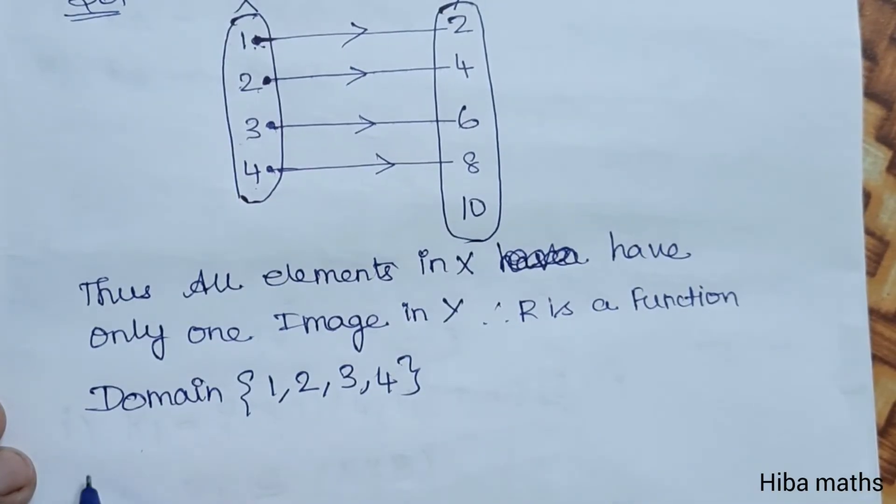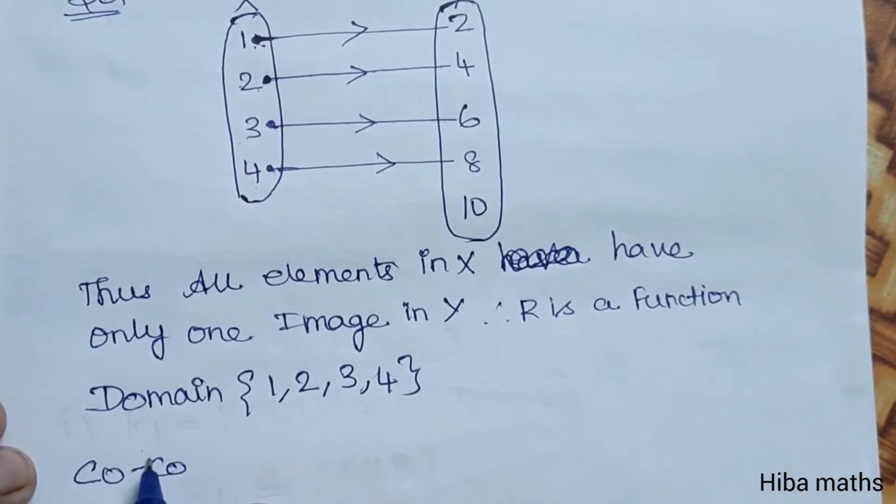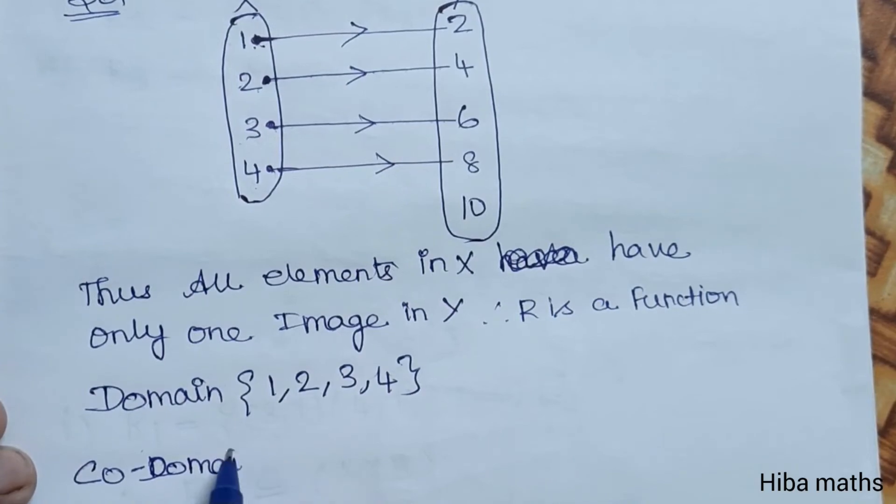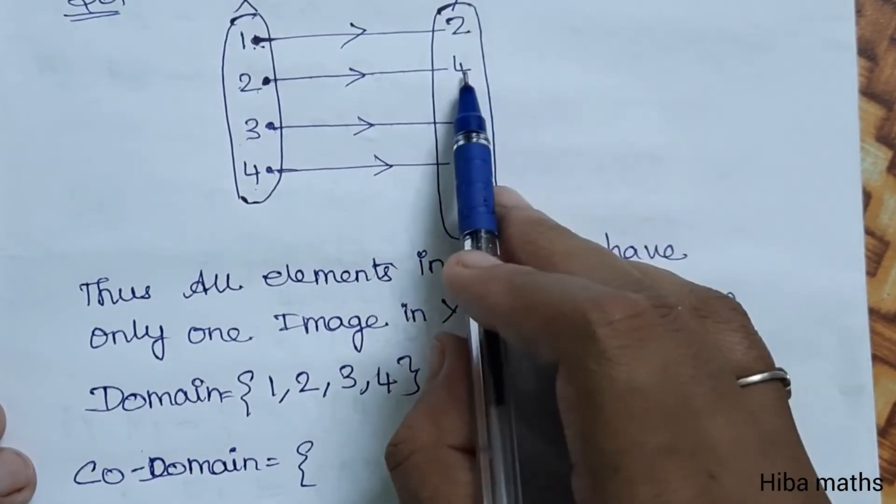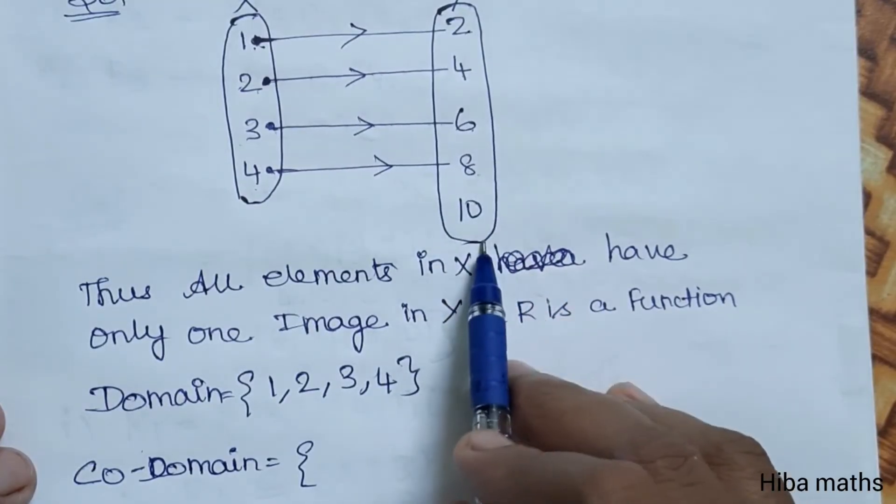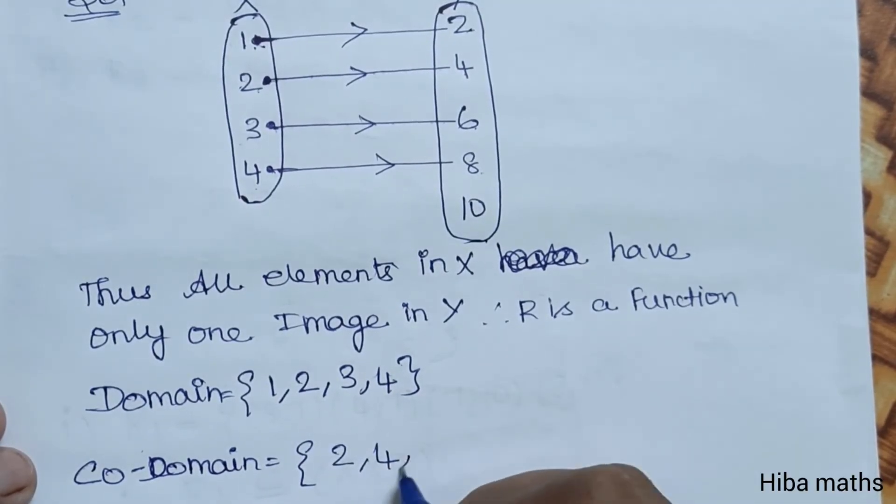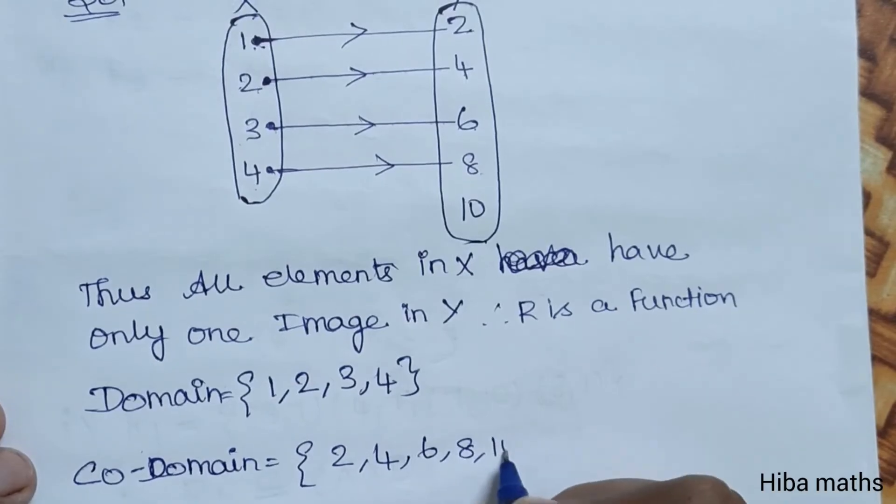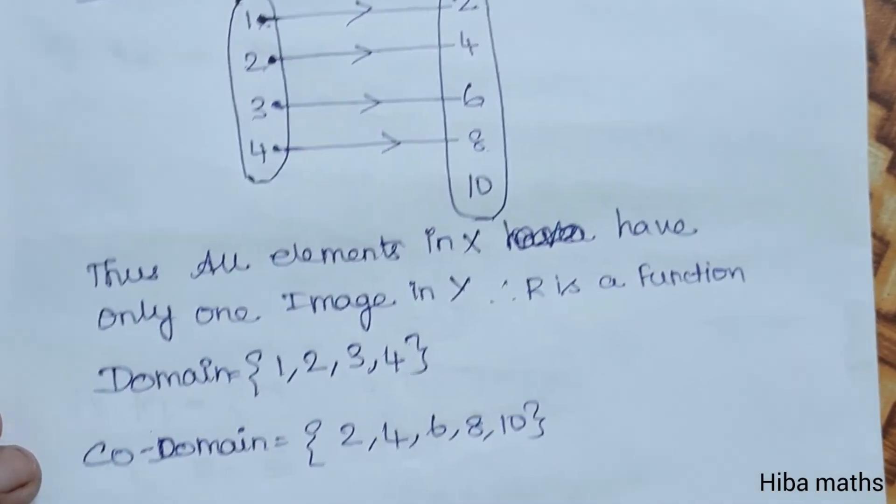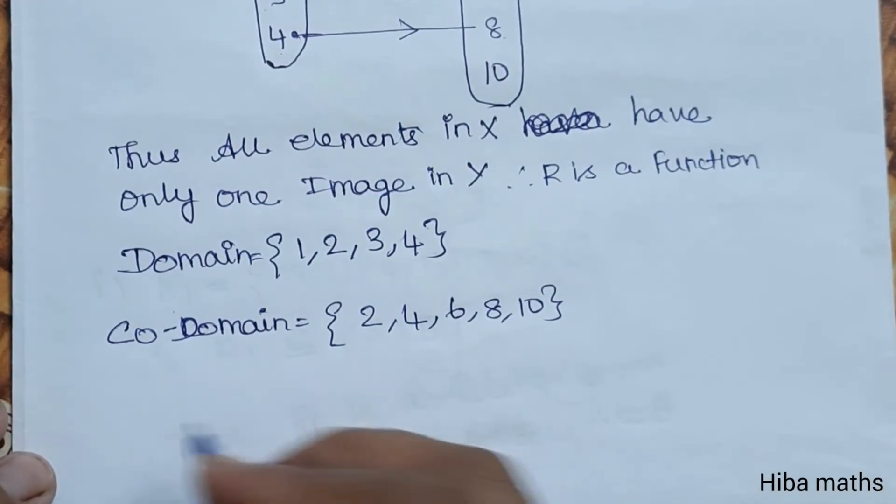Codomain: 2, 4, 6, 8, 10. And so you can write the range.